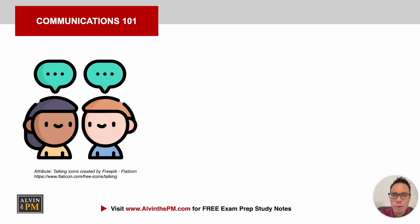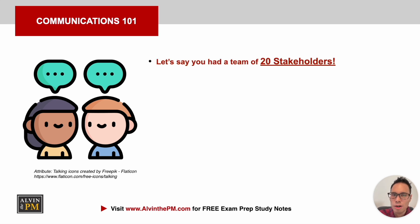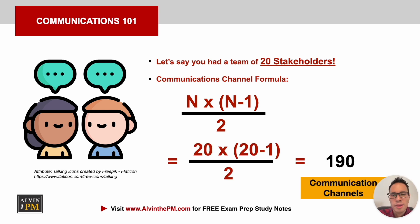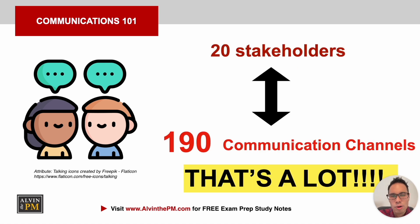We all know how important communication is on a project, especially if you're leading a global team across the entire country of more than 20 stakeholders. Using the formula for communication channels of n multiplied by n minus 1 divided by 2, where n is the number of stakeholders involved in the project, there would be 190 communication channels for all 20 stakeholders — a lot of channels to facilitate as a project manager.